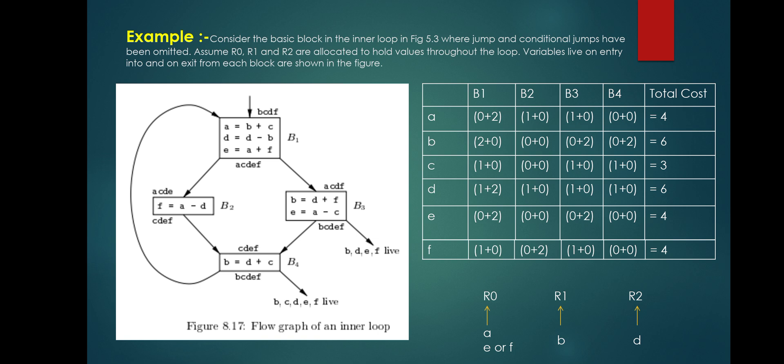Consider a flow graph of an inner loop with four blocks: b1, b2, b3, b4. Live on entry variables are b, c, d, f and live on exit variables are a, c, d, e, f. For variable a in block b1, using the formula use(a, b1) + 2 × live(a, b1): a appears on the right side of e = a + f once, but a is also assigned in a = b + c, so use(a, b1) = 0.